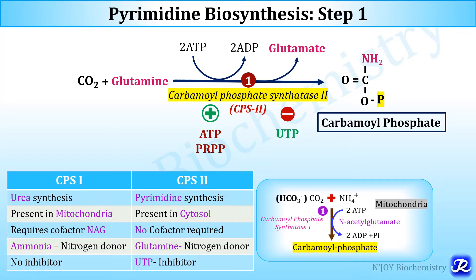Key differences: CPS1 is present in mitochondria (urea cycle), while CPS2 is present in the cytosol (pyrimidine synthesis). CPS1 requires the cofactor N-acetylglutamate; CPS2 requires no cofactor. The nitrogen donor for CPS1 is ammonia, whereas for CPS2 it is glutamine. CPS1 has no inhibitor, while CPS2 is inhibited by UTP.